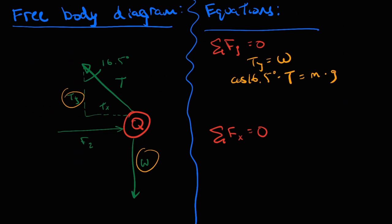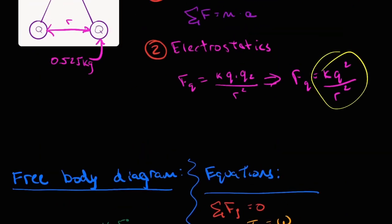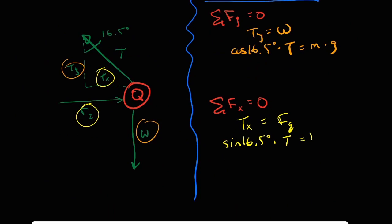Now let's jump for a second to the horizontal force equation and see what we can do with that. As we can see with our free body diagram, the horizontal forces that cancel each other out will be the horizontal component of the tension force and the electrostatic force. From here, we can rewrite this as sine 16.5 degrees multiplied by the tension equal to k times q squared divided by r squared.